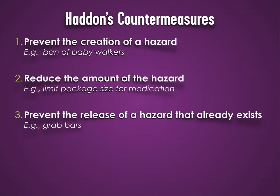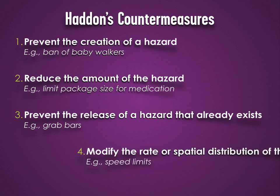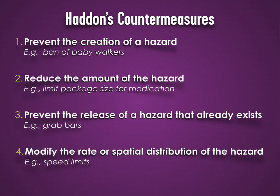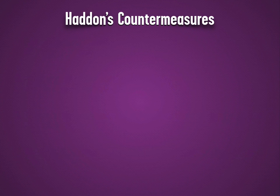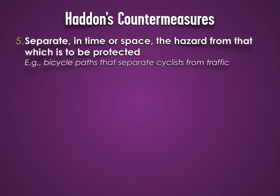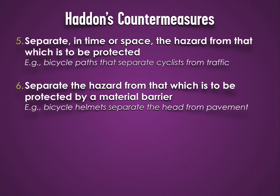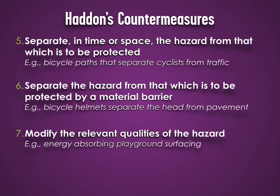Preventing the release of a hazard that already exists, as in grab bars. Modifying the rate or spatial distribution of the hazard, as in speed limits. Separating in time or space the hazard from that which is to be protected, as in bicycle paths. Separating the hazard from that which is to be protected by a material barrier, as in bicycle helmets. Modifying the relevant qualities of the hazard, as in energy-absorbing playground surfacing.